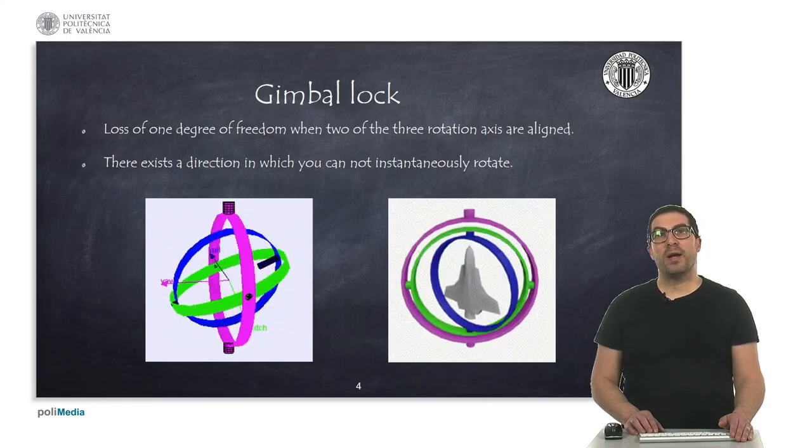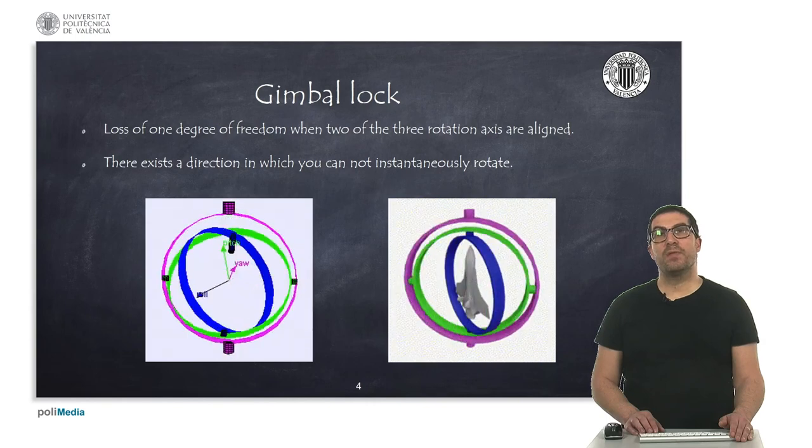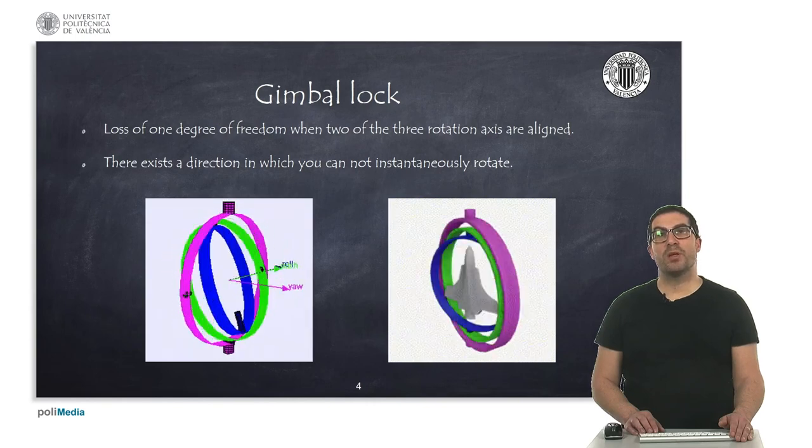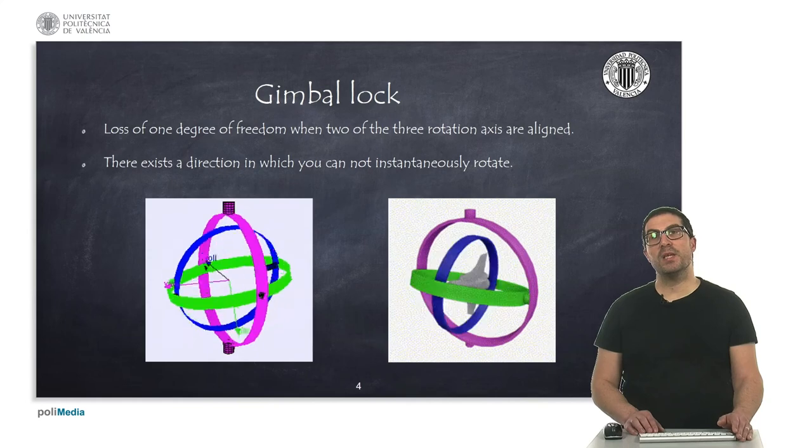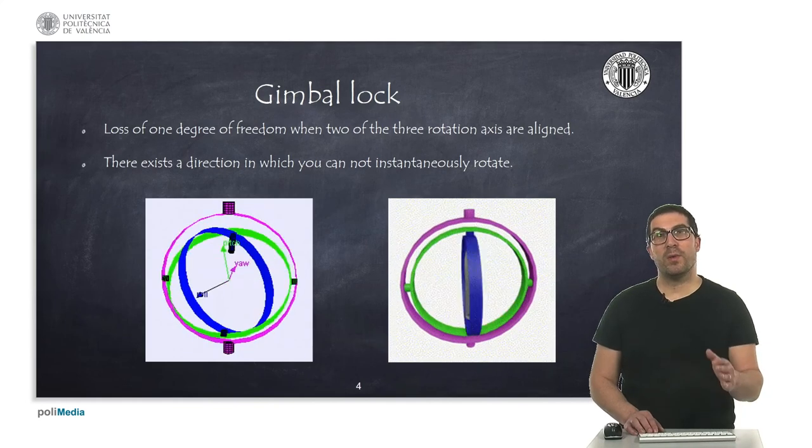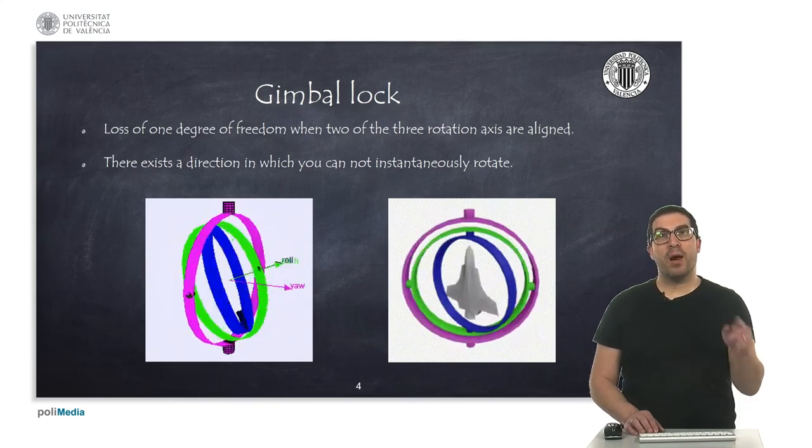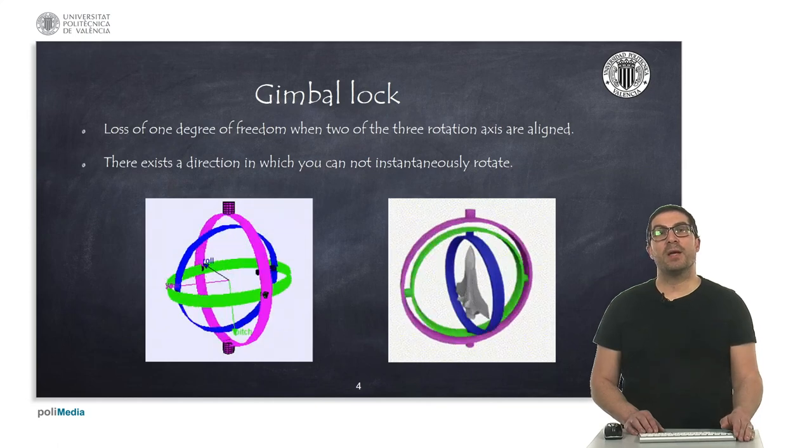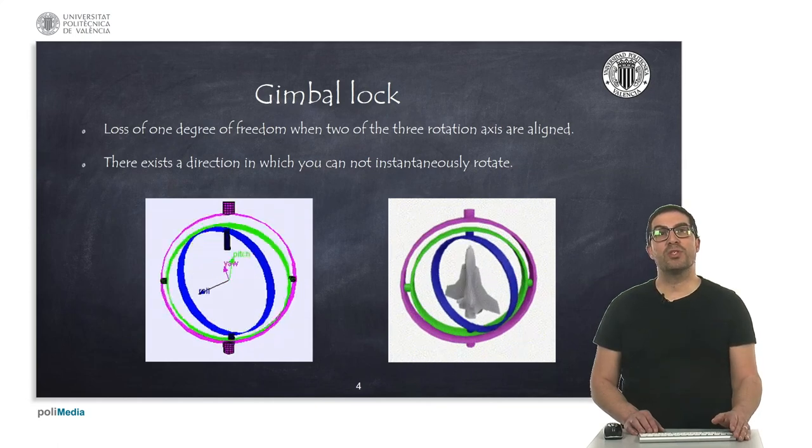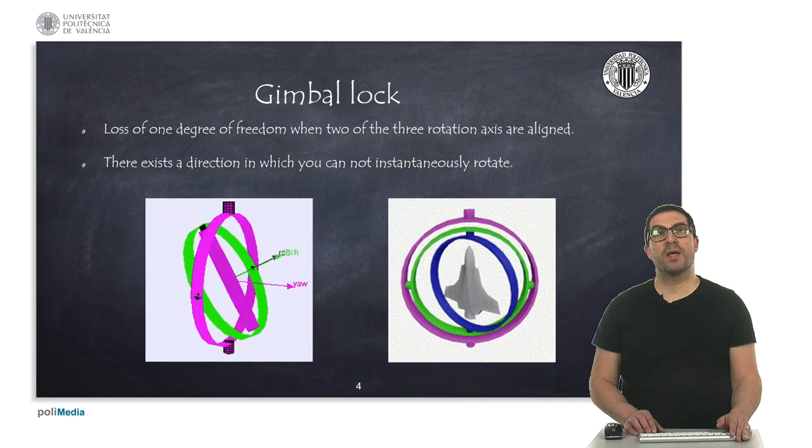In the case of Euler angles, we can see that two of the angles describe the same rotation. In fact, this can be clearly seen in the plane figure on the right, where the outer and inner magenta circles contribute to the same rotations when it's in the situation of gimbal lock.